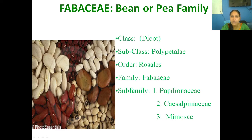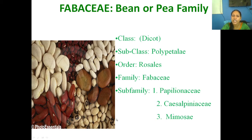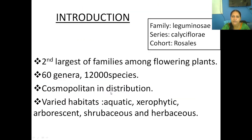The Fabaceae plant is also called the Bean or Pea family. It comes under class Dicotylidae, subclass Polypetalae, order Rosales, family Fabaceae, with subfamilies Papilionoideae, Caesalpinioideae, and Mimosoideae — that is PCM, as already discussed.